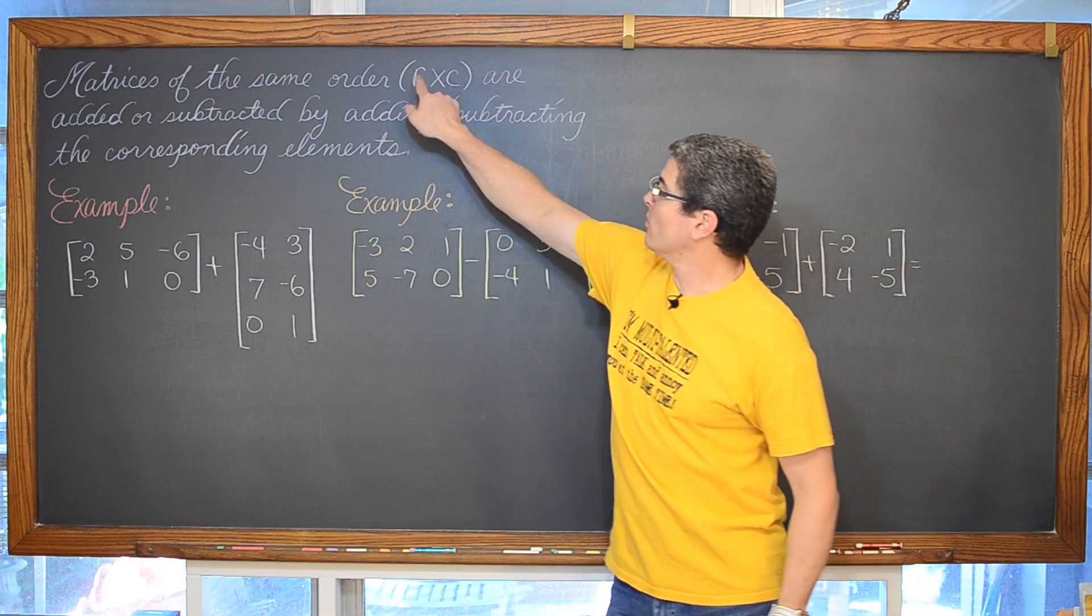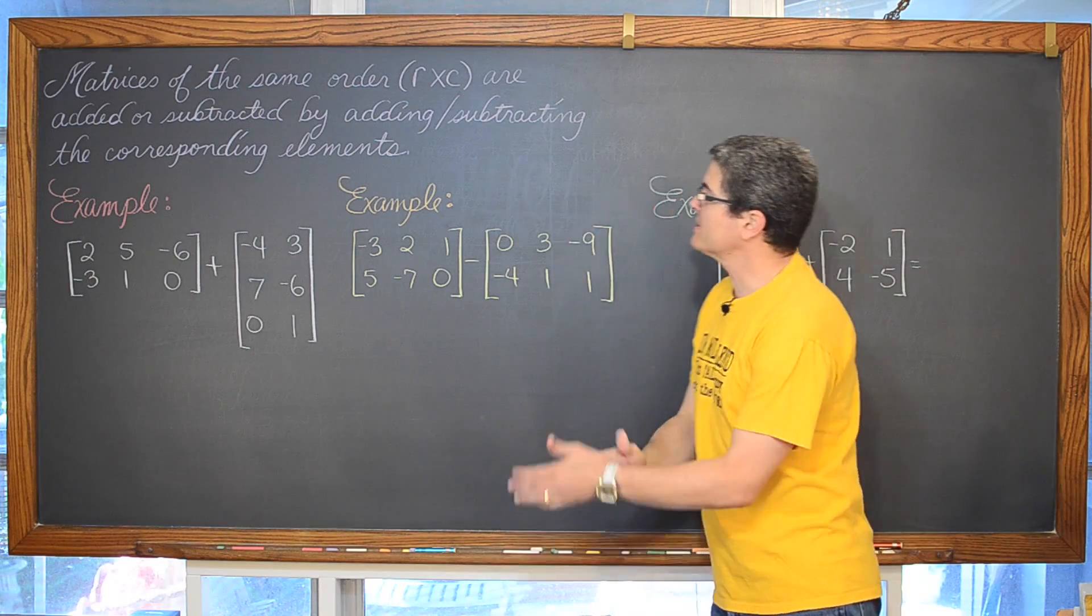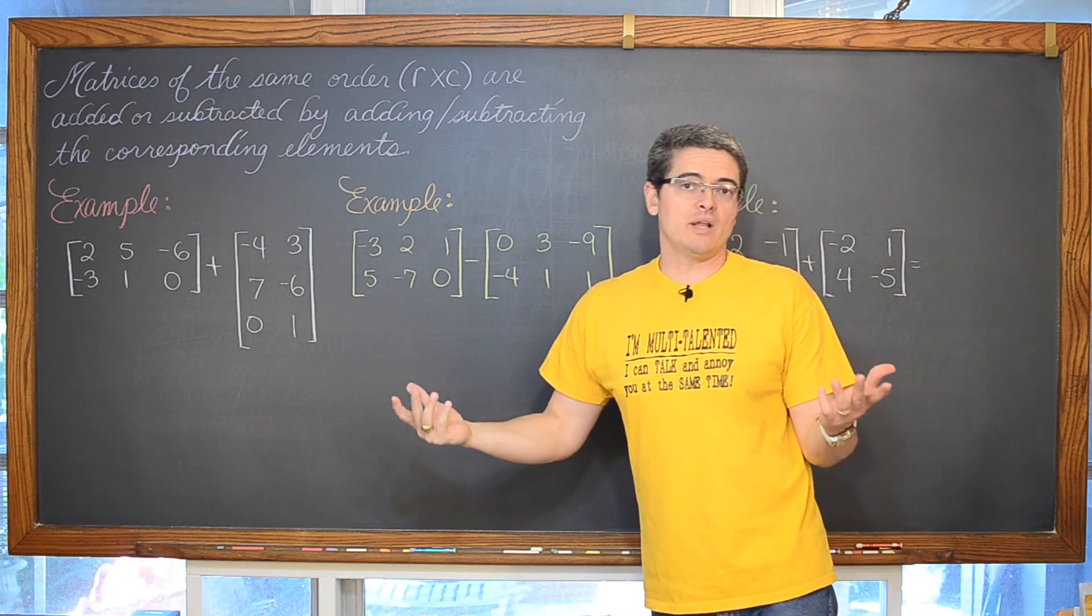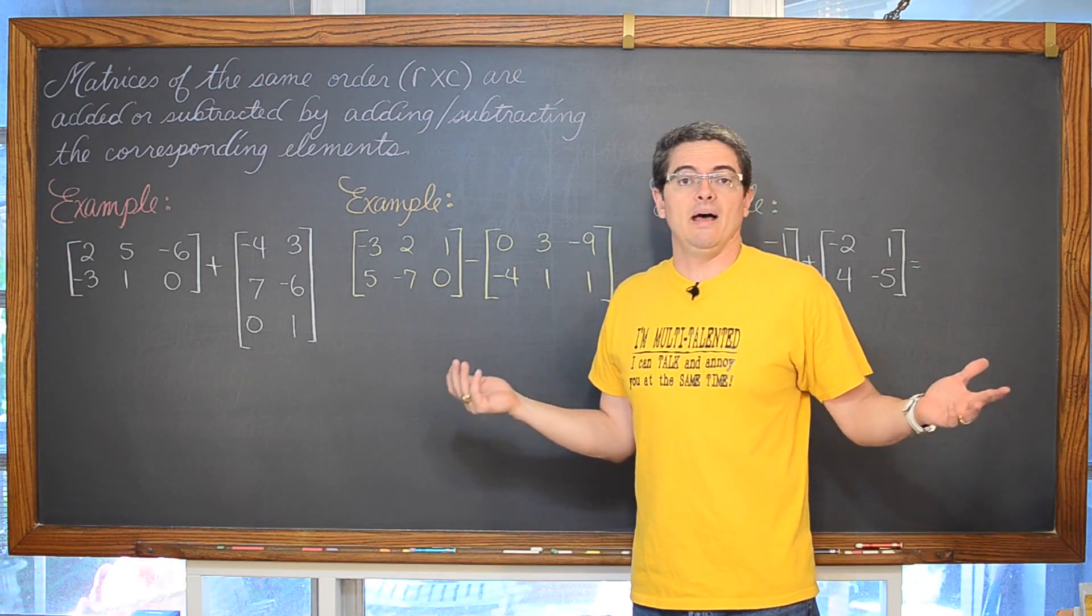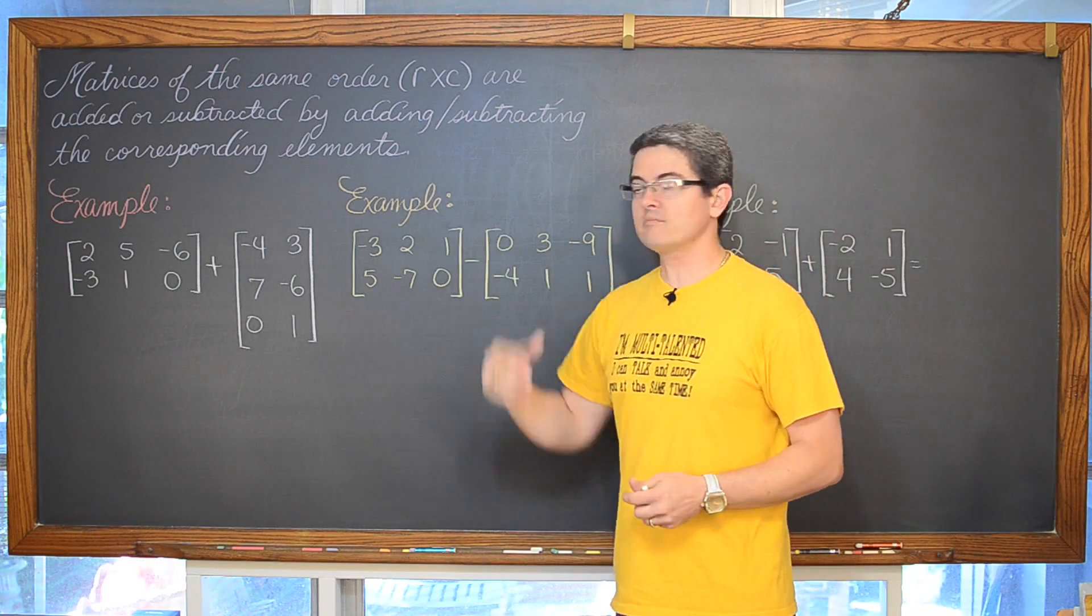Matrices of the same order are added or subtracted by adding or subtracting the corresponding elements. So basically if you can add two numbers and you are good with working with signs, positive and negatives, then you can add matrices. You just find the corresponding elements and add them.